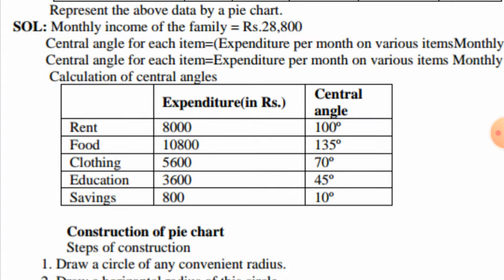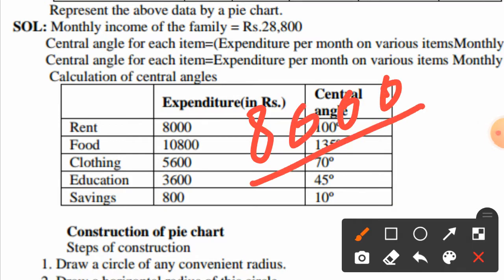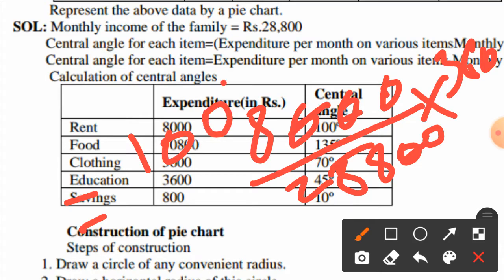To find the central angle for rent: 8,000 divided by 28,800, multiplied by 360. By solving this, the angle equals 100 degrees.